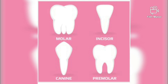The second one is canine. These are four in number, one on either side of the incisors in each jaw. These are pointed and sharp and are used to hold, cut, and tear the food.